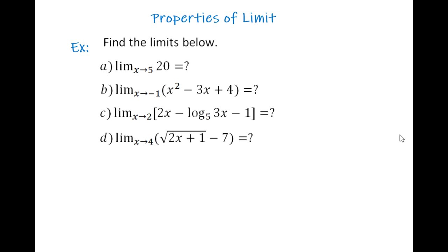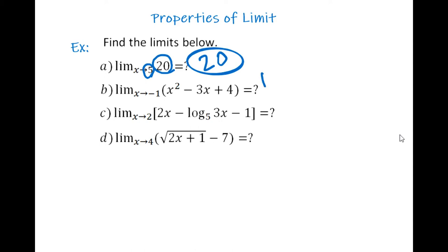Let's take a look at the related examples. For the first question, find the limits below. In the first option we have the limit of 20 as x goes to 5 — that number is not important, x can go wherever, and the limit is exactly 20. In the next case, the limit as x goes to negative 1 of x² − 3x + 4.